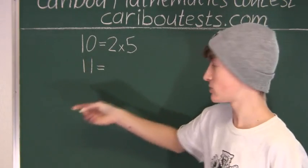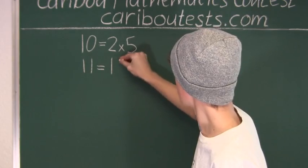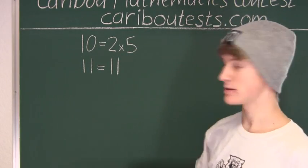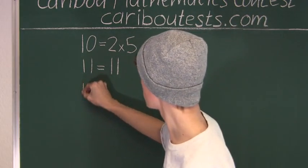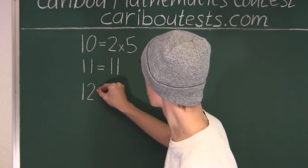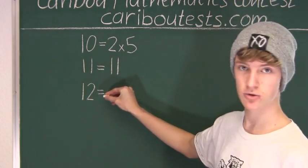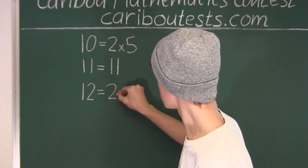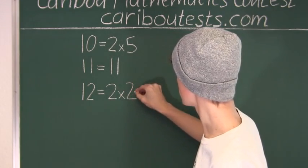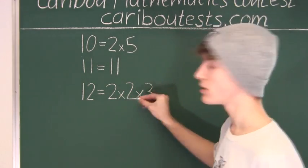Now for 11, we know it is just 11 - 11 is a prime number itself. And for 12, it is 2 times 2 times 3. We know this is true because they're all prime numbers.